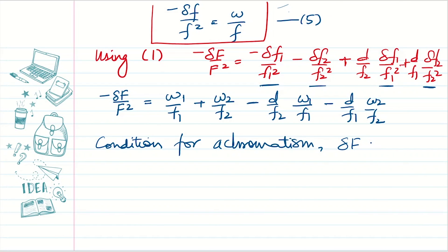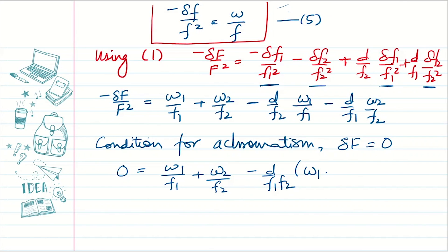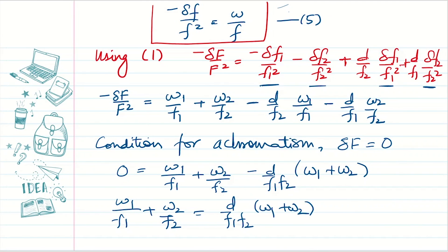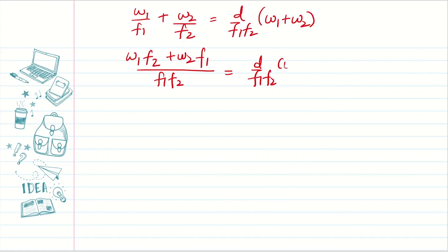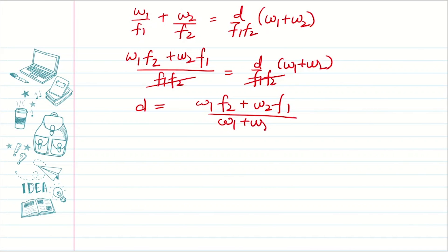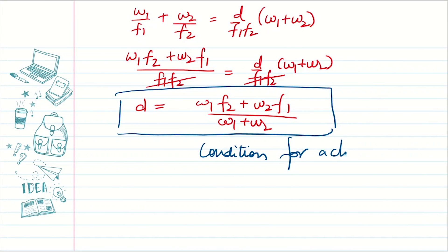For achromatism, the deviation in the mean focal length for the two colors must be zero. Setting δF = 0, the condition becomes: ω1/f1 + ω2/f2 = (d/f1f2)(ω1 + ω2). Simplifying — taking ω1·f2 + ω2·f1 on the left and canceling f1·f2 — we get: d = (ω1·f2 + ω2·f1)/(ω1 + ω2). This is the condition for achromatism at a finite separation d.